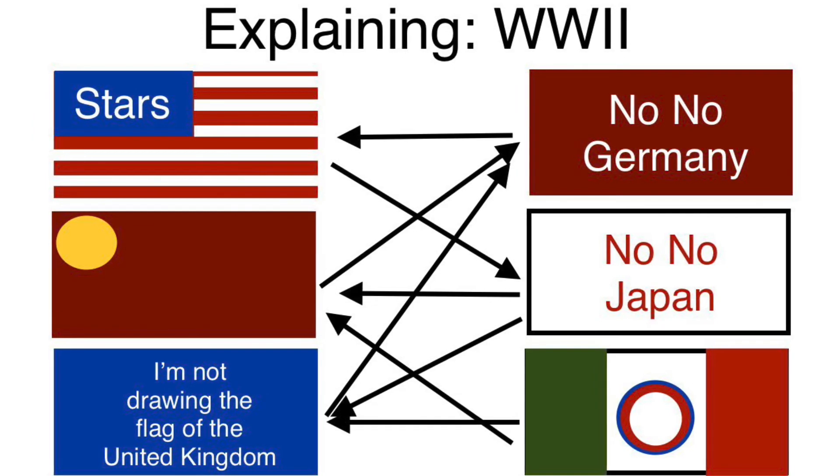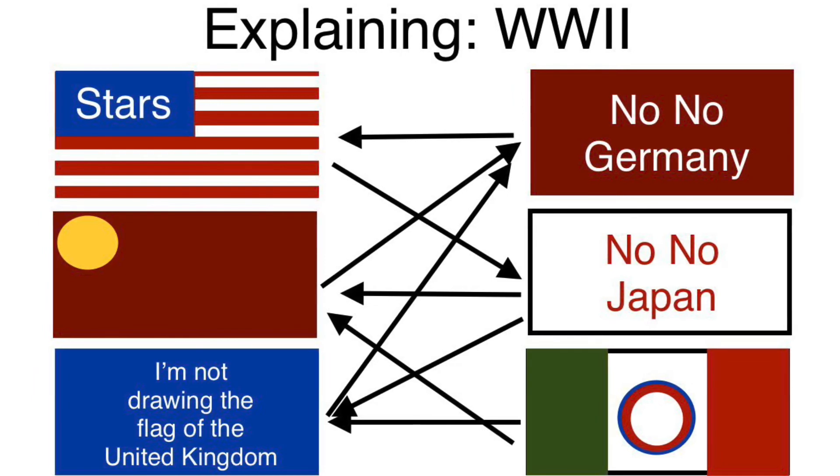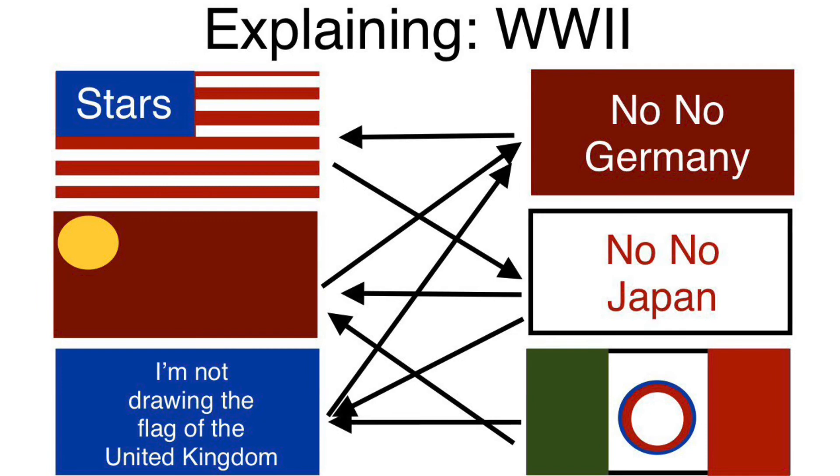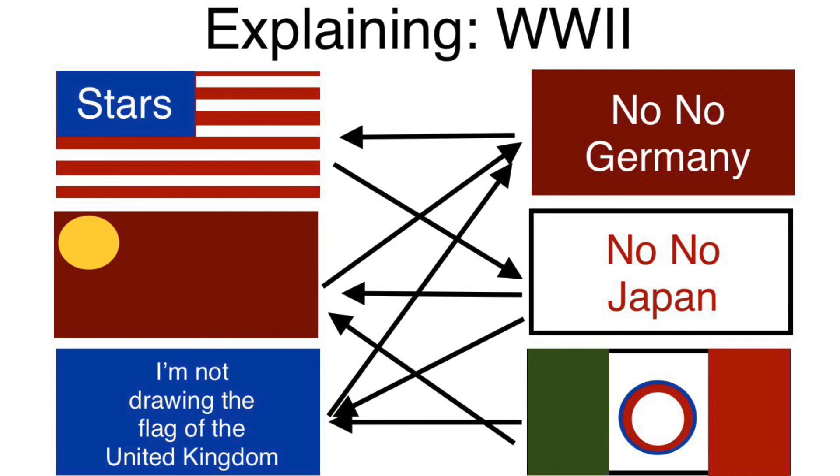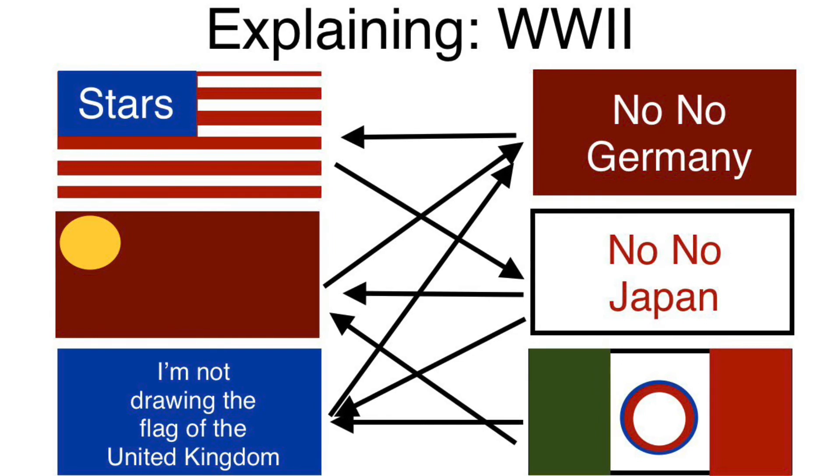In 1944, the Japanese would begin to be pushed back, and in that very same year, the Allies would launch Operation Overlord, storming the beaches of Normandy in France, which happened to be under Germany's control. Today, this is known as D-Day.